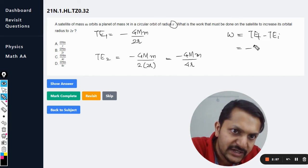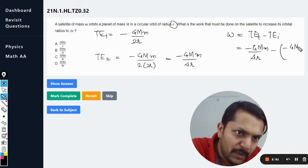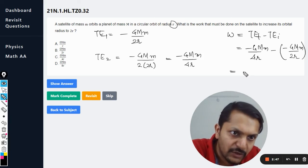It is minus GMm divided by 4r minus minus GMm divided by 2r, which comes out to be...